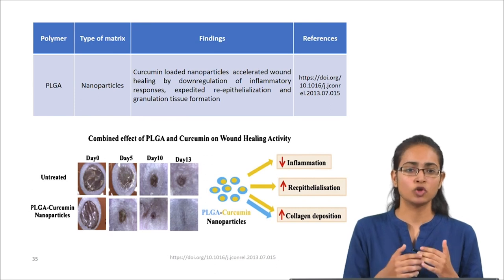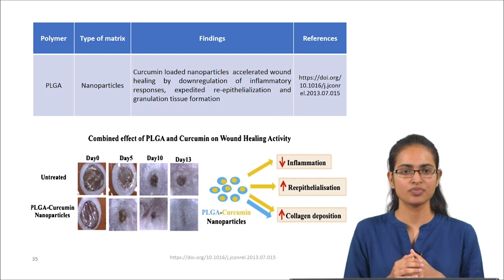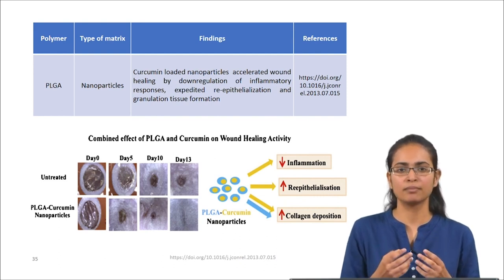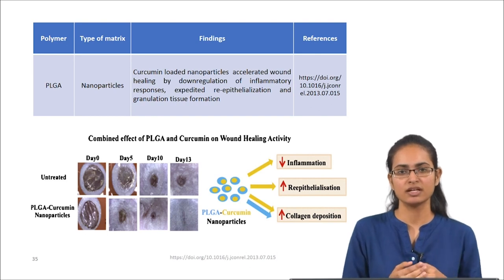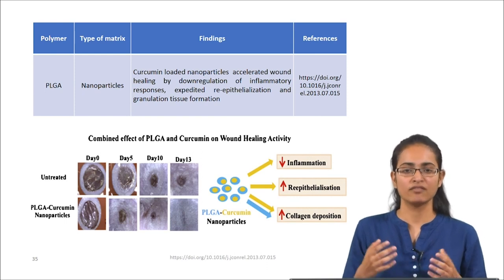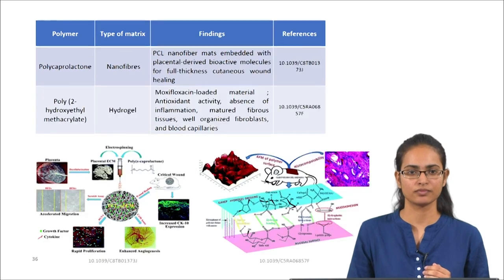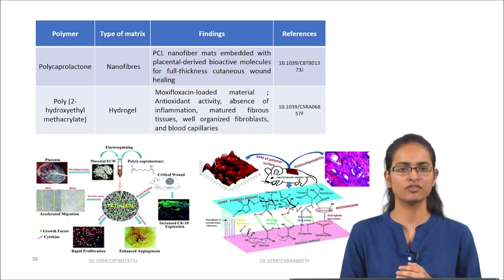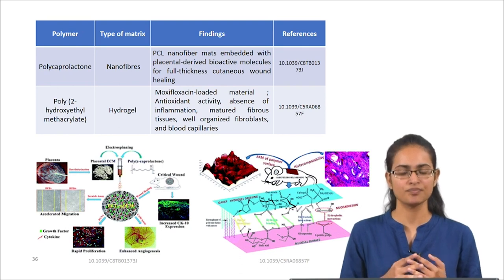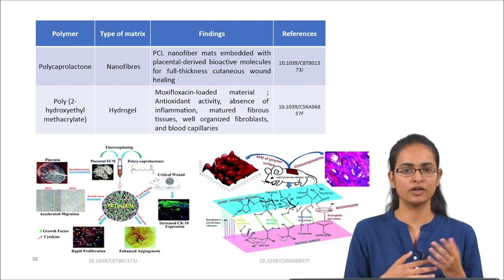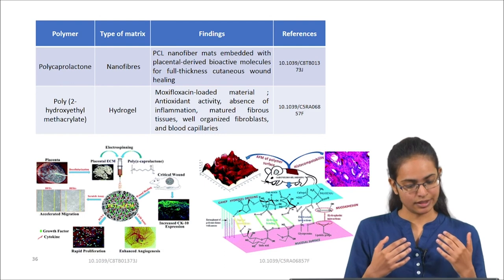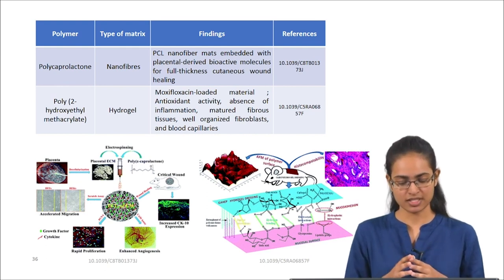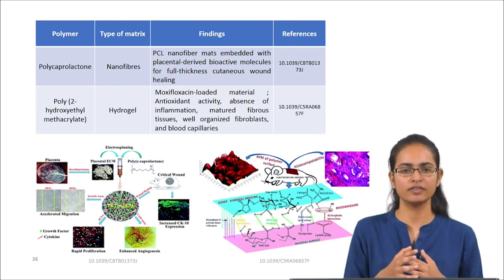PLGA is a copolymer of lactic acid and glycolic acid. In one example, PLGA nanoparticles were loaded with curcumin, a bioactive agent, showing reduced inflammation, increased re-epithelialization, and increased collagen deposition — all important for wound healing. Polycaprolactone nanofibers synthesized by electrospinning were embedded with placental-derived bioactive molecules for wound healing. PolyHEMA was synthesized as a hydrogel loaded with moxifloxacin, showing antioxidant activity and absence of inflammation.